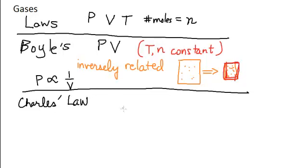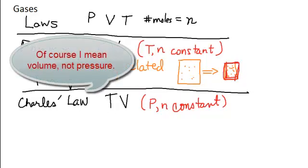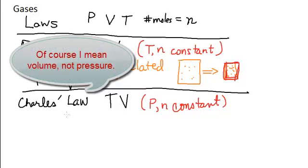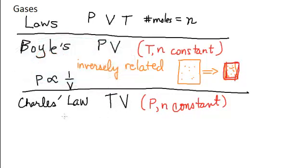Charles was looking at the relationship between temperature and volume. He was only looking at temperature and volume, keeping pressure and number of moles constant. What he discovered is that the volume is directly proportional to the temperature, as long as you are using the Kelvin temperature scale. Temperature and volume are directly proportional in the Kelvin scale.